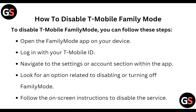How to disable T-Mobile Family Mode? To disable T-Mobile Family Mode, you can follow these steps: Open the Family Mode app on your device, log in with your T-Mobile ID, navigate to the Settings, then Account section within the app. Look for an option related to disabling or turning off Family Mode, and follow the on-screen instructions to disable the service.